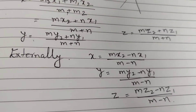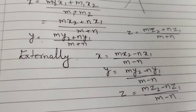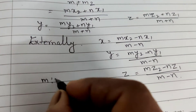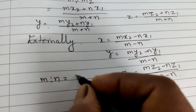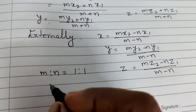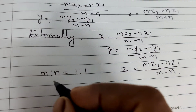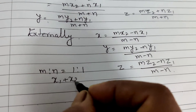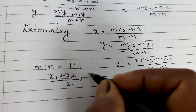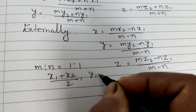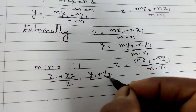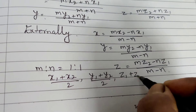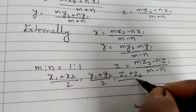The coordinates of the midpoint — where m to n ratio equals 1 to 1 — are: x = (x1 + x2) / 2, y = (y1 + y2) / 2, and z = (z1 + z2) / 2.